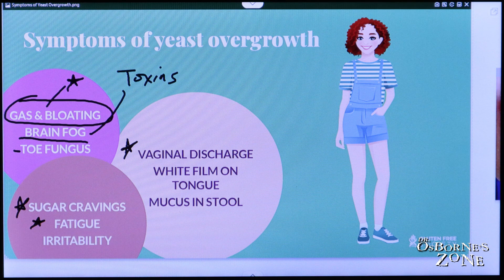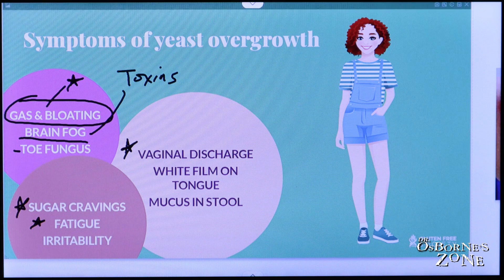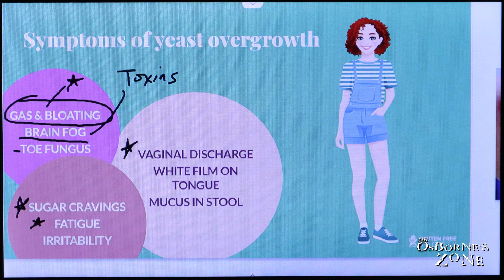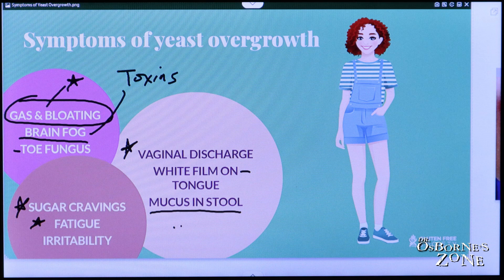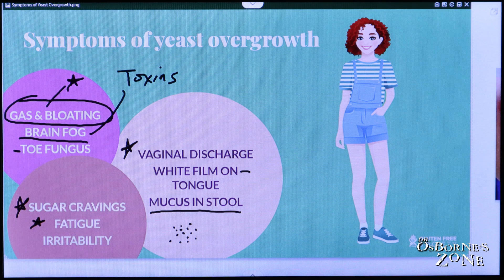Sometimes women will get vaginal discharge — a very white discharge — and that can be a sign of yeast as well. A white film on the tongue, and then mucus in the stool, almost what looks like little white specks in the stool. That can also be a sign of yeast overgrowth.